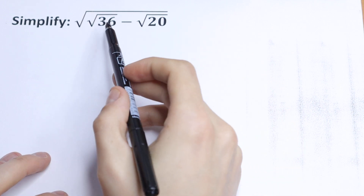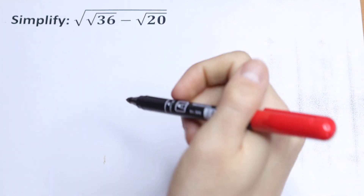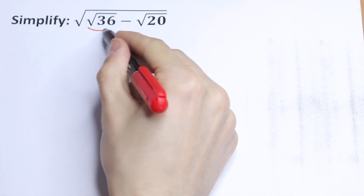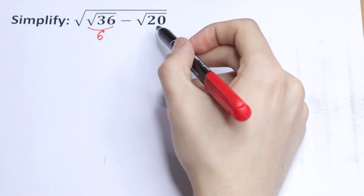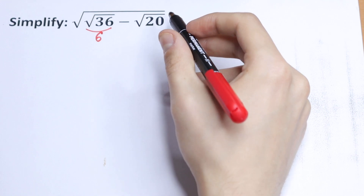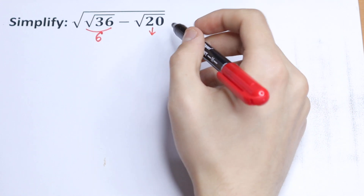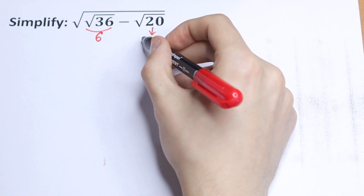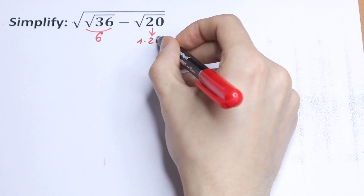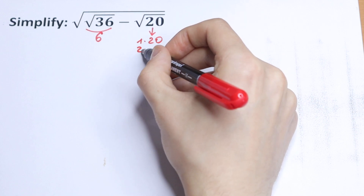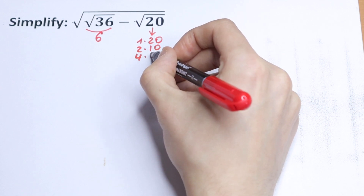First of all, we know that the square root of 36 is equal to 6. And the square root of 20 we can write in two or three ways: 1 times 20, 2 times 10, or 4 times 5.